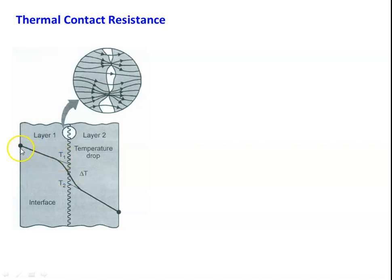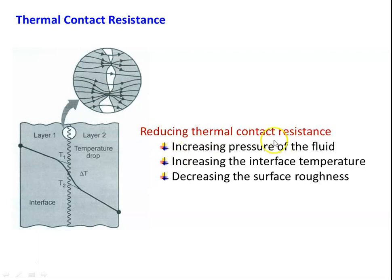T1 is the temperature at the end of layer 1 and T2 is the temperature at the start of layer 2. There will be a temperature drop due to the contact resistance, which is very important when you design an industrial heat exchanger or heat transfer equipment. To minimize the thermal contact resistance, there are different methods: increasing the pressure of the fluid, increasing the interface temperature, or decreasing the surface roughness. The third option is the most practical — we can have highly polished surfaces, polishing them before joining together. That is the better method among the three alternatives.